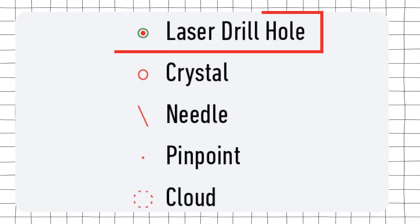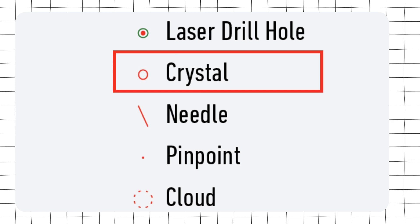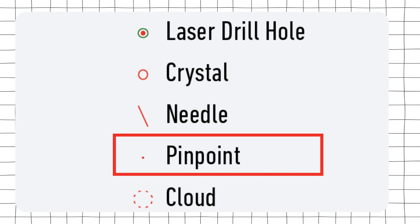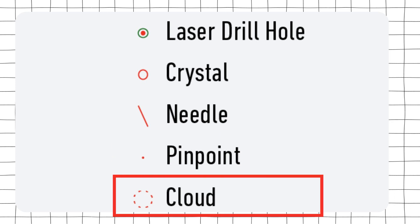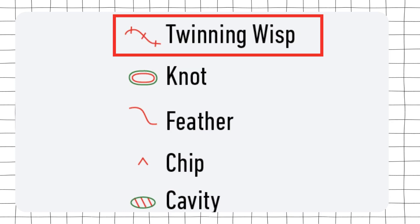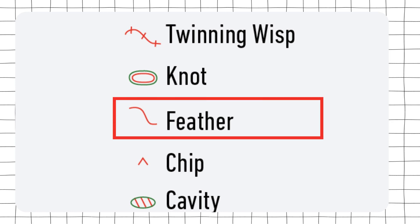As you can see in this list, the laser drill hole has both colors — red and green. The crystal is one of the most common inclusions, represented by a circle. The needle is one straight thin line. The pinpoint is a small dot because these are very, very small. The cloud has a dotted circle. The twinning wisp looks like a very curved fence. The knot also has both colors — green and red. The feather is also a very important surface-reaching inclusion present in many stones, represented by a very curved line.